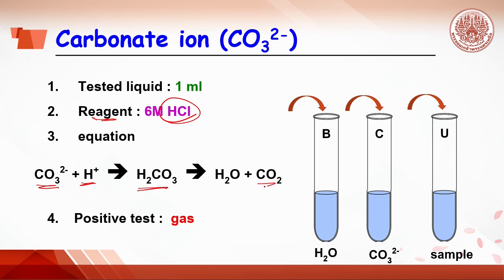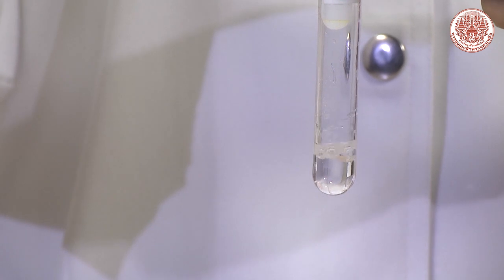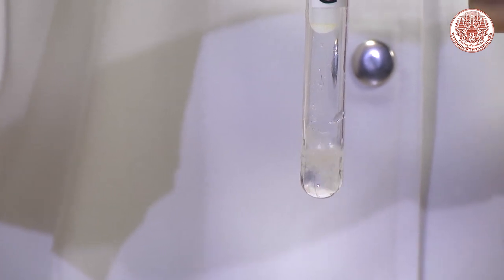It decomposes to get carbon dioxide gas. So, positive test for carbonate ion is carbon dioxide gas. Hence, in C tube, bubble will be observed. Where B tube, no bubble is seen.